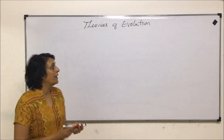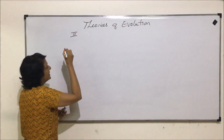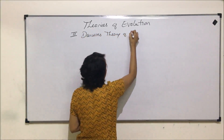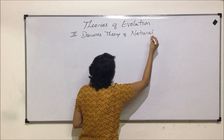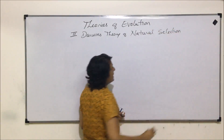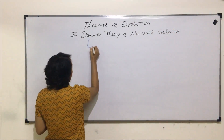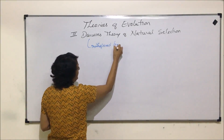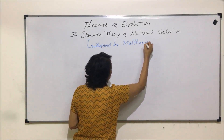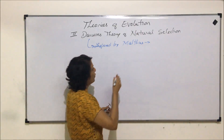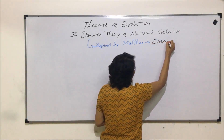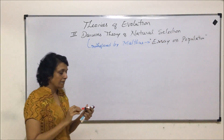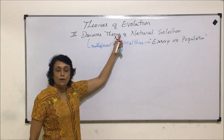Let us start with the second theory — Darwin's theory of natural selection. Darwin was inspired by a publication of Malthus. The scientist's name was Malthus, and his publication which Darwin read and got inspired with was 'Essay on Population.' Darwin proposed various postulates as a part of this theory of natural selection.